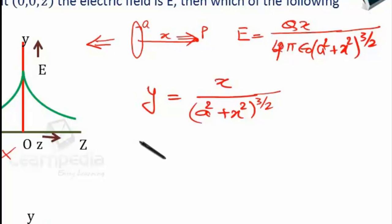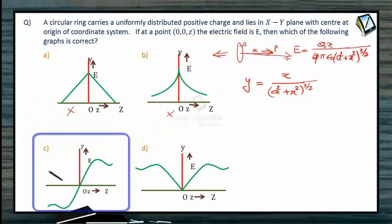and to the left of the ring, direction has to be this way. That means, if we assume this direction as the positive direction, then this direction must be the negative. That means, for x negative, the field has to be negative, so option C has to be correct option.